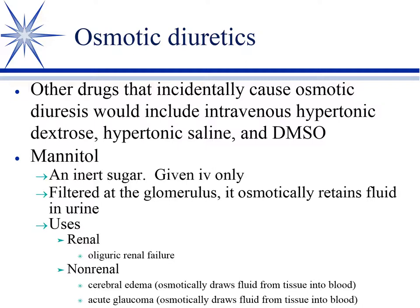Mannitol is filtered at the glomerulus and osmotically draws or retains fluid. We use it in oliguric renal failure — it's one of our mainstays in trying to manage that. Non-renally, its primary use is in cerebral edema. When you've got traumatic injury to the brain and the brain is swelling, because the brain is in an enclosed cavity it can't expand, so pressures go sky high, resulting in brain injury and in worst-case scenarios cerebellar herniation and death. We give IV mannitol; it stays in the blood and draws fluid from the tissues — in this case from the brain — to shrink that swelling.